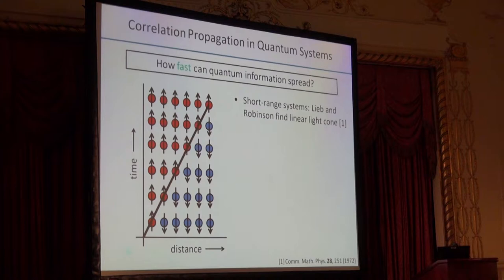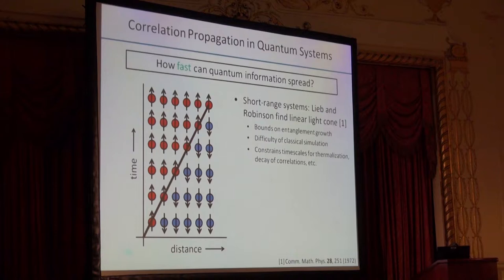This has led to a bit of a revolution in condensed matter physics, and a number of very important theories have been proven based on the existence of these Lieb-Robinson type bounds. For instance, you can bound how quickly entanglement grows in a quantum many-body system. It tells you something about how difficult the system might be to classically simulate. It also tells you how quickly two different sides of a quantum system might come into thermal equilibrium with each other and constrains those time scales.